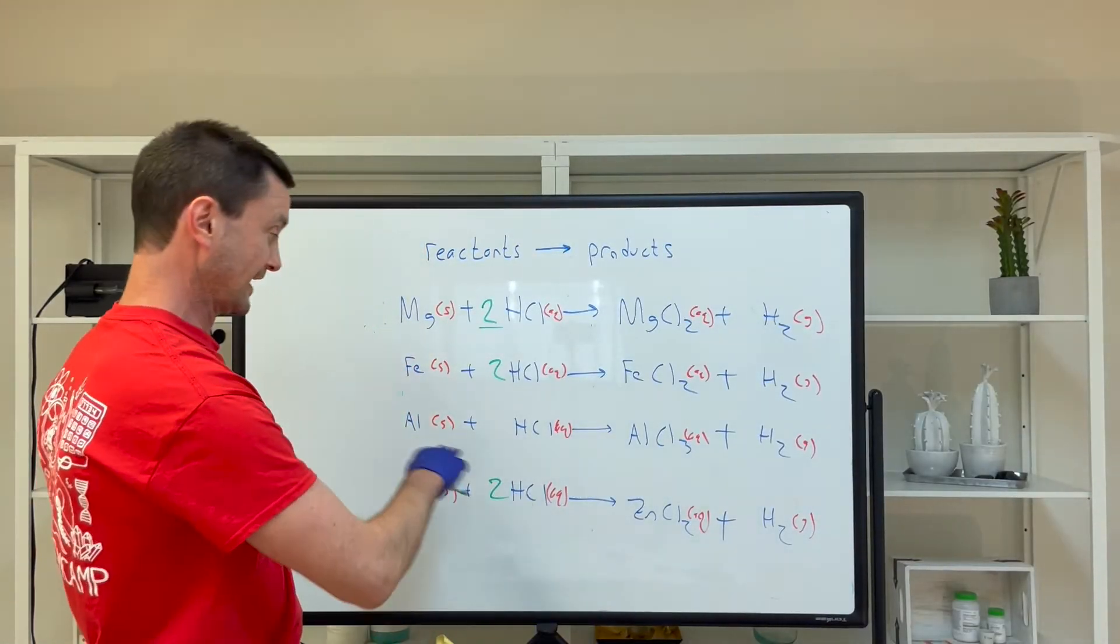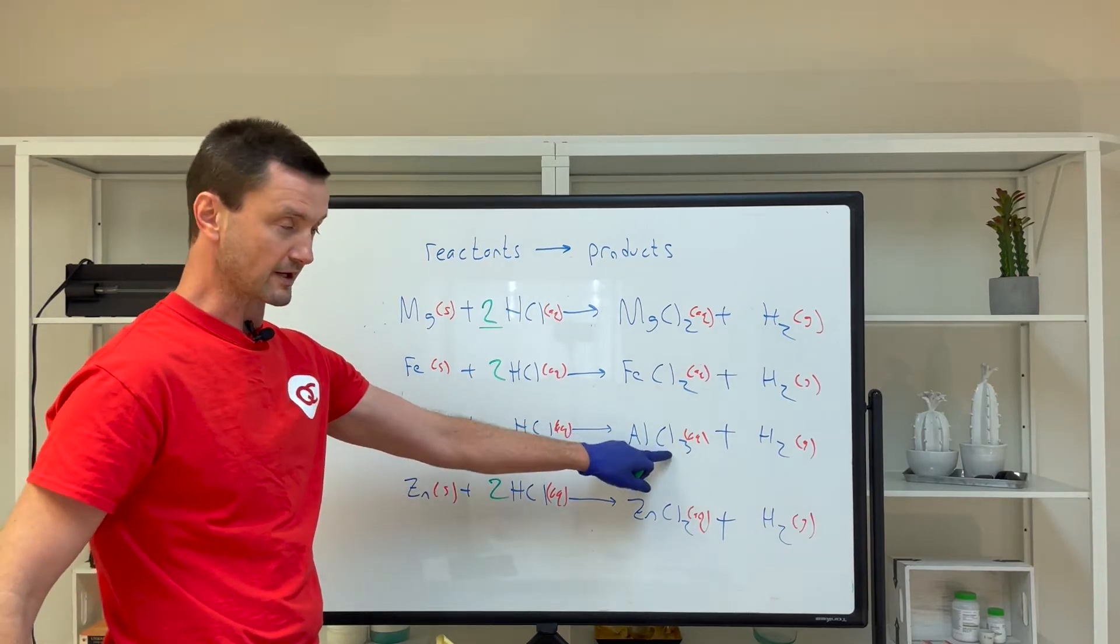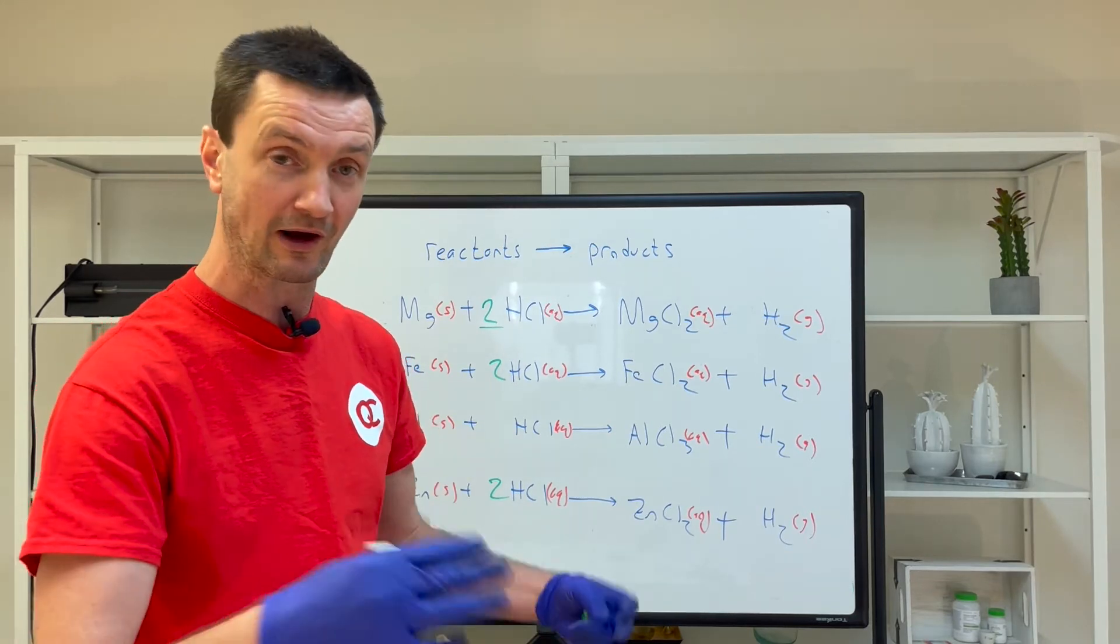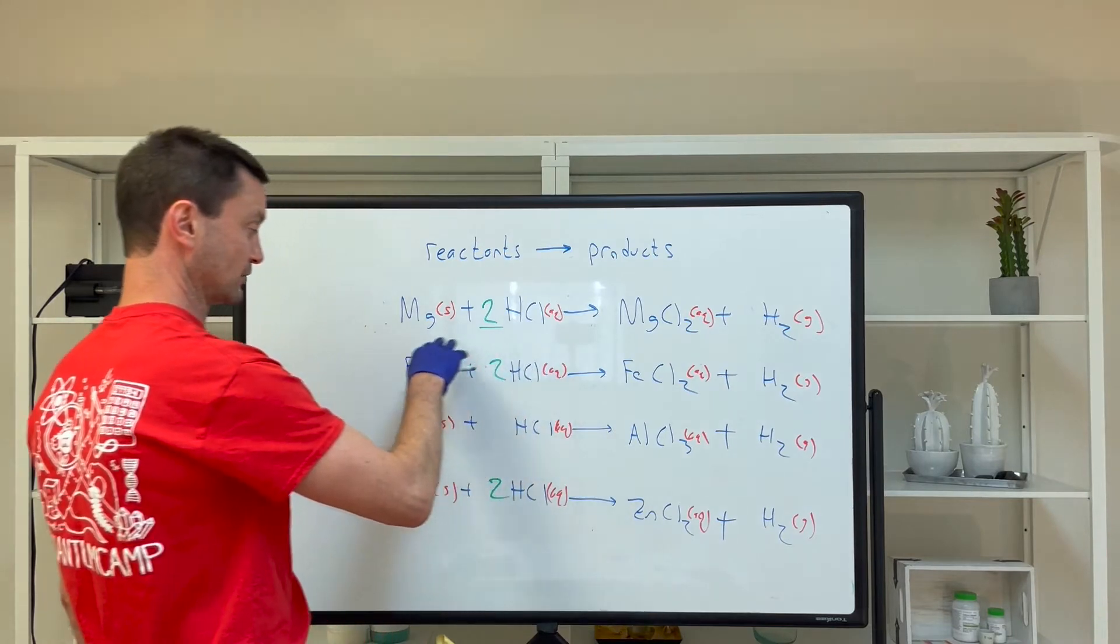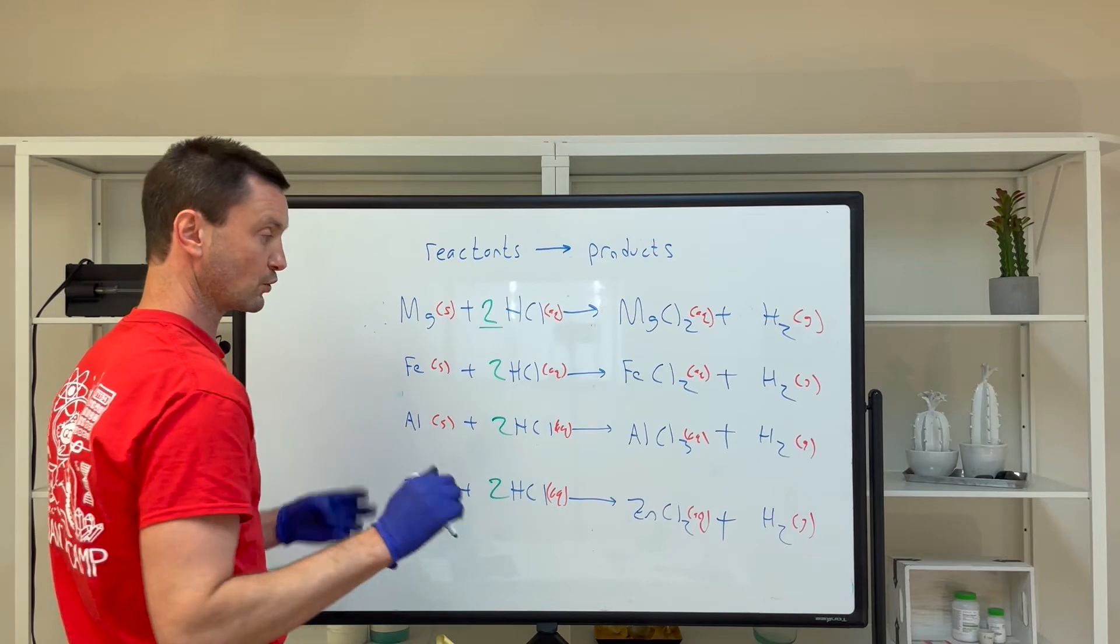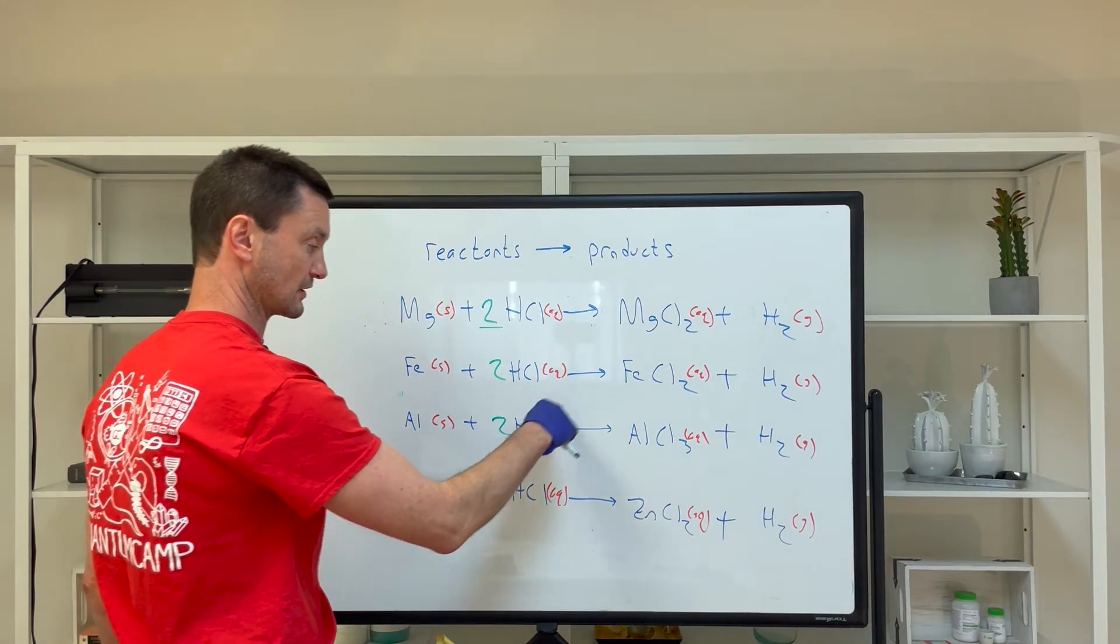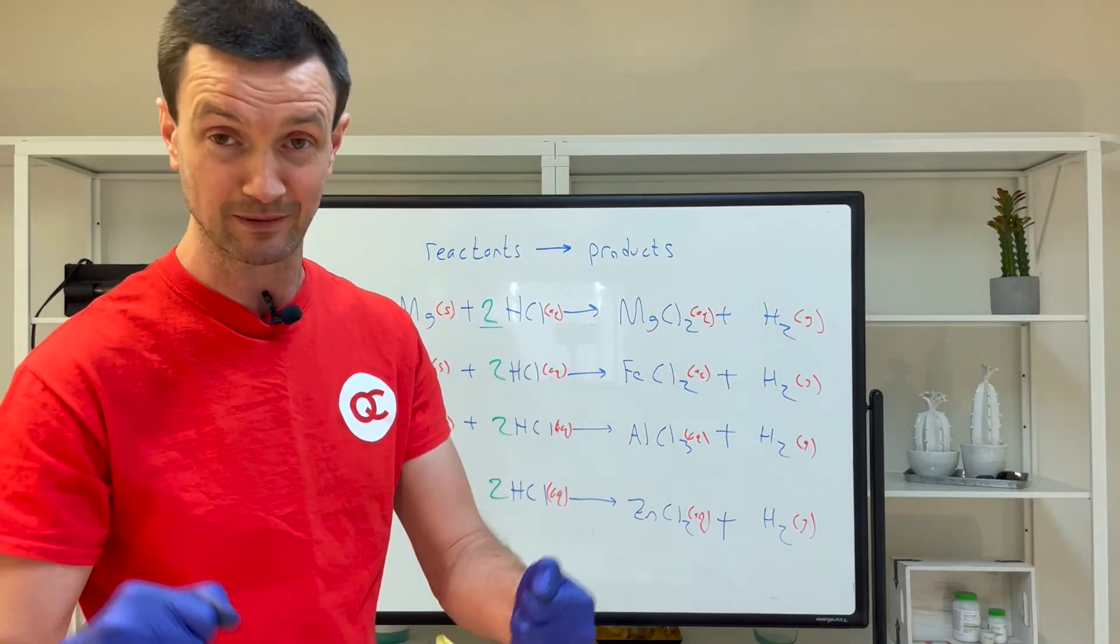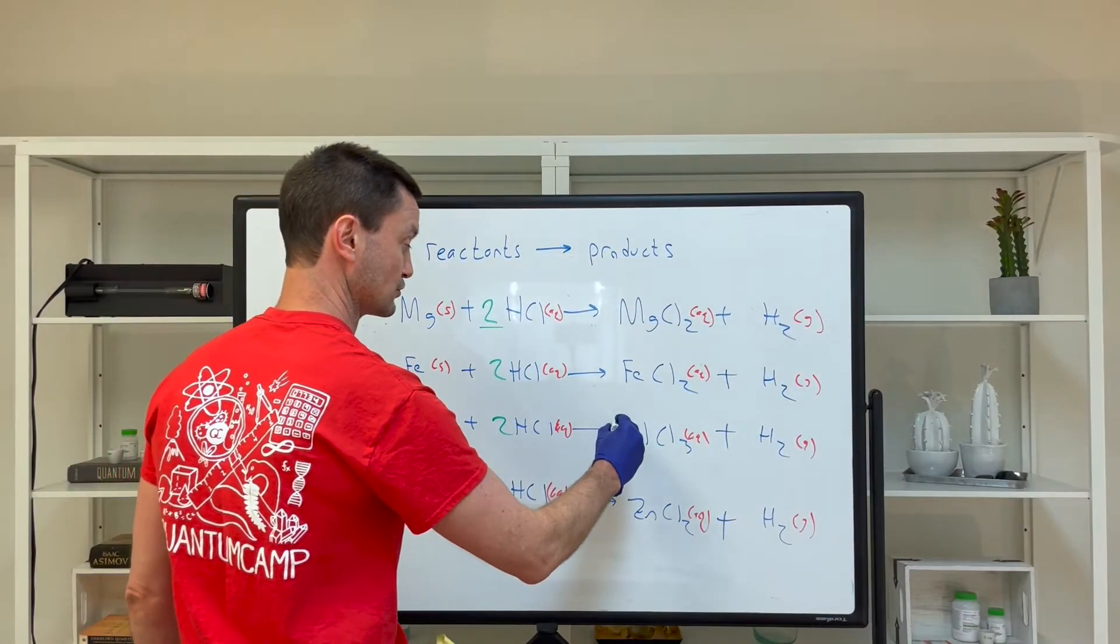Now let me take a crack at this middle reaction, aluminum and hydrochloric acid. This three here introduces some difficulty. I'll start as with iron and zinc. I have two hydrogens here, so let me try a two here. Quickly, a problem arises—I have two chlorines here and three chlorines here. According to conservation of mass, I can't produce a chlorine atom out of thin air.